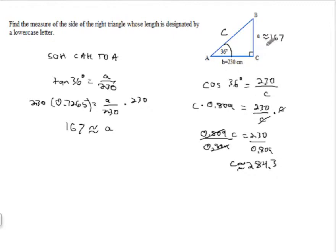And maybe I should write this approximately equal to 284.3 because I've rounded that again. And that kind of fits with what we know about right triangles, that the hypotenuse has to be bigger than both of the legs. The hypotenuse is the longest side.